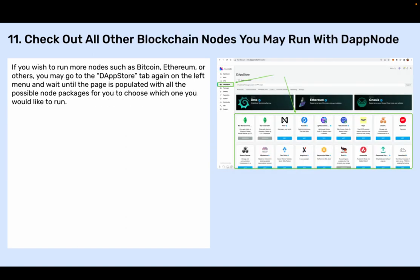Step eleven: Check out all other blockchain nodes you may run with DAPnode. If you wish to run more nodes such as Bitcoin, Ethereum, or others, you may go to the DAP store tab again on the left menu and wait until the page is populated with all the possible node packages for you to choose which one you would like to run.